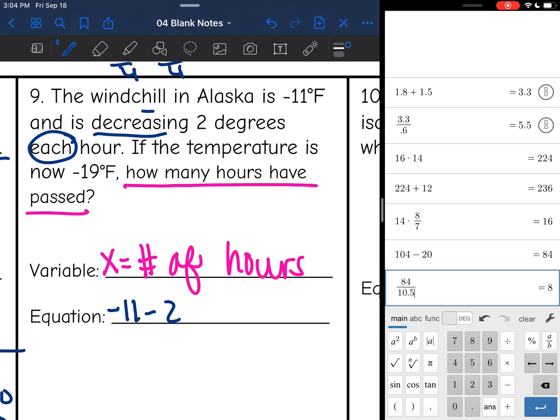Okay, so it says the windchill is negative 11. They're starting at negative 11, and then they're decreasing, which is subtracting, 2 degrees each hour. Each is another word that usually means x, and look, there's our variable. We're looking for the number of hours. So it's going to be minus 2x equals, now it is negative 19.